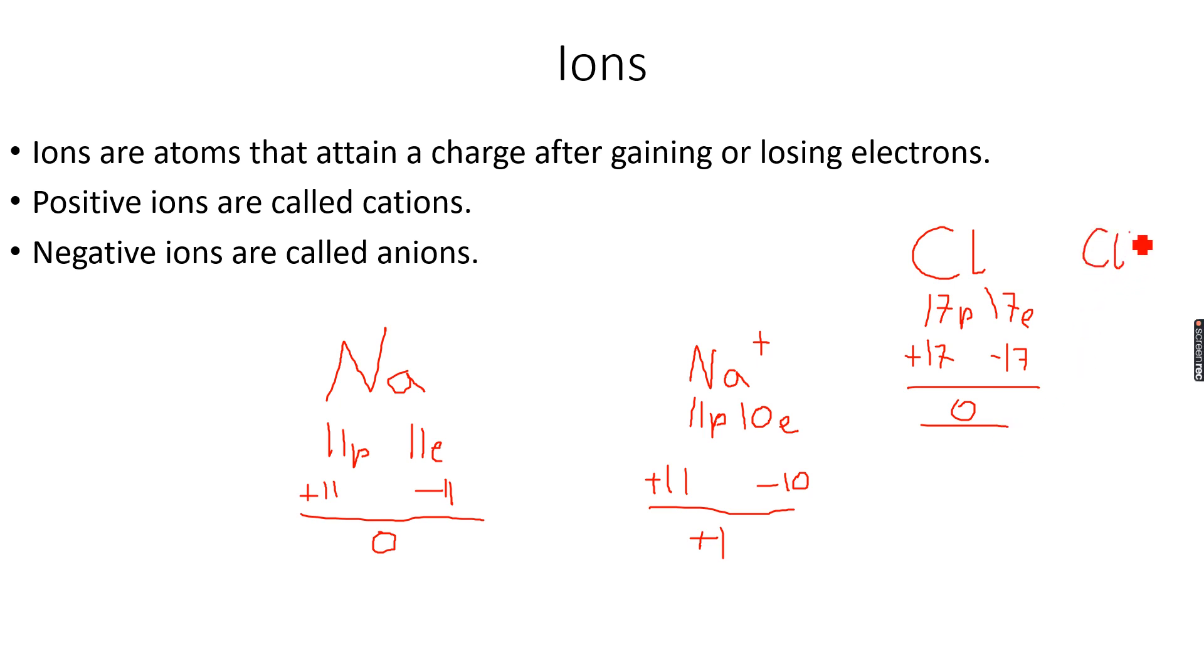Chlorine forms an anion. Sodium forms a cation while chlorine forms an anion which is called Cl negative—it's called the chloride ion. This has 17 protons because there is no change in the number of protons.